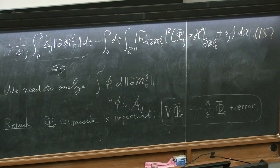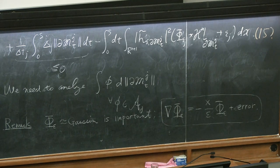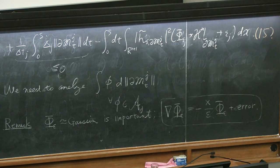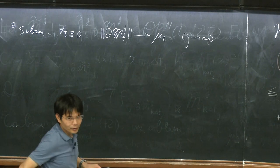In taking the limit, there is still a challenge — it's not just taking a limit and being done. You can actually extract a subsequence such that for all t, the measures M_j converge to some Radon measure μ_t. This can be done because of some sort of monotone decreasing property about this measure.